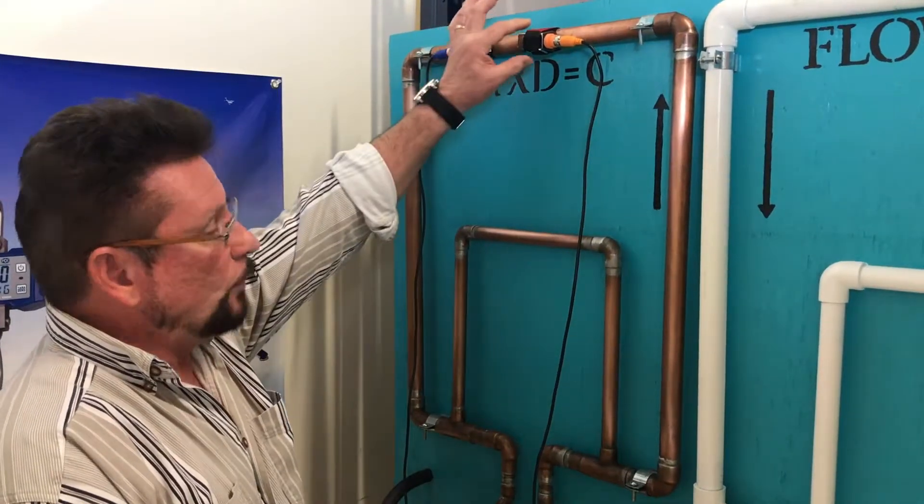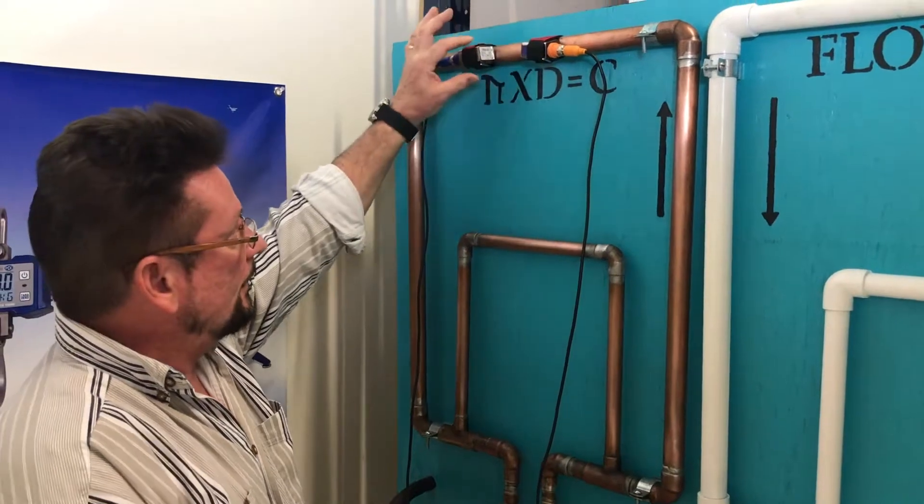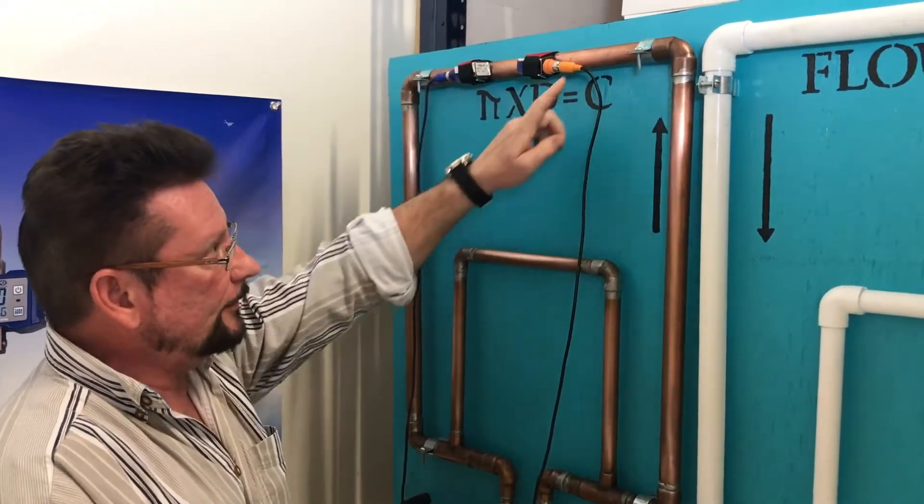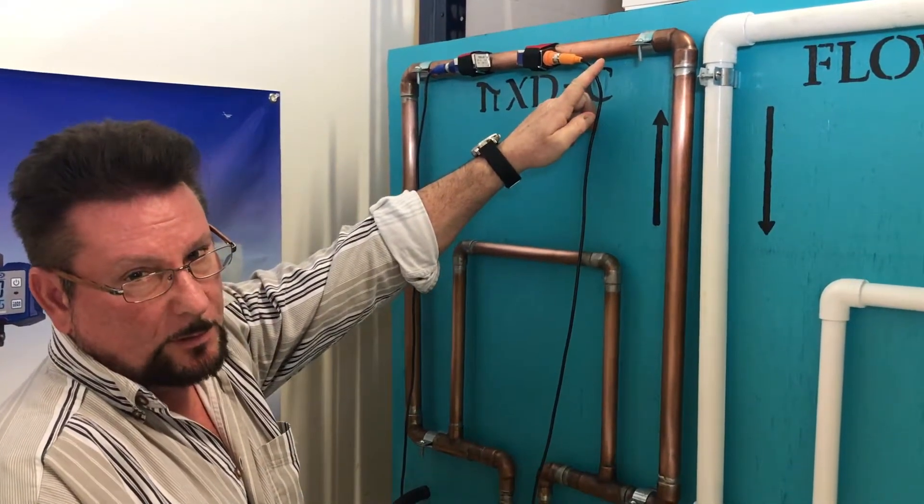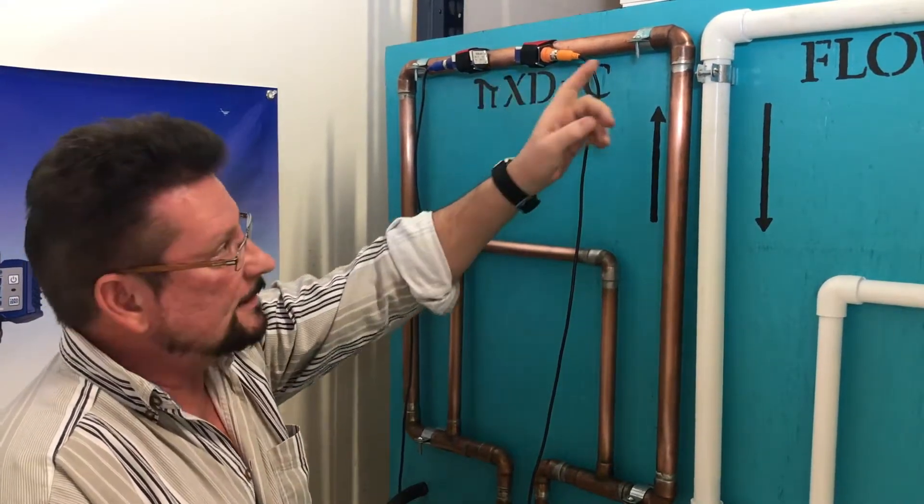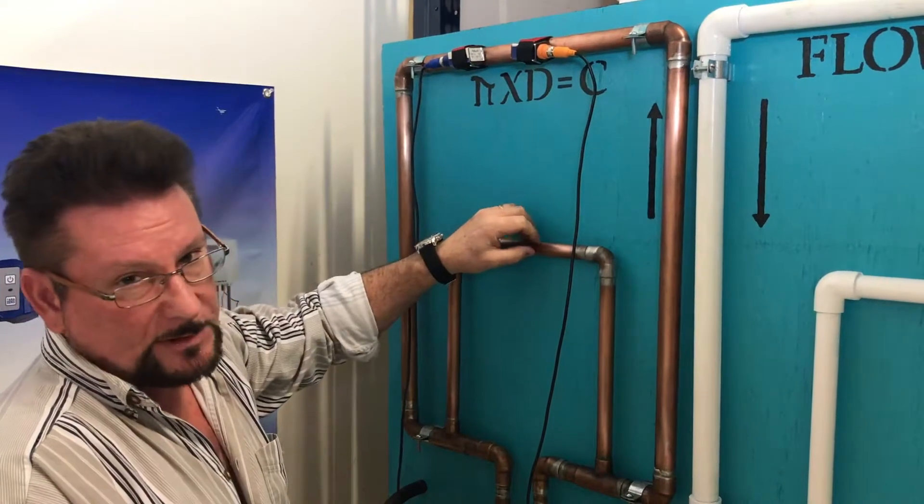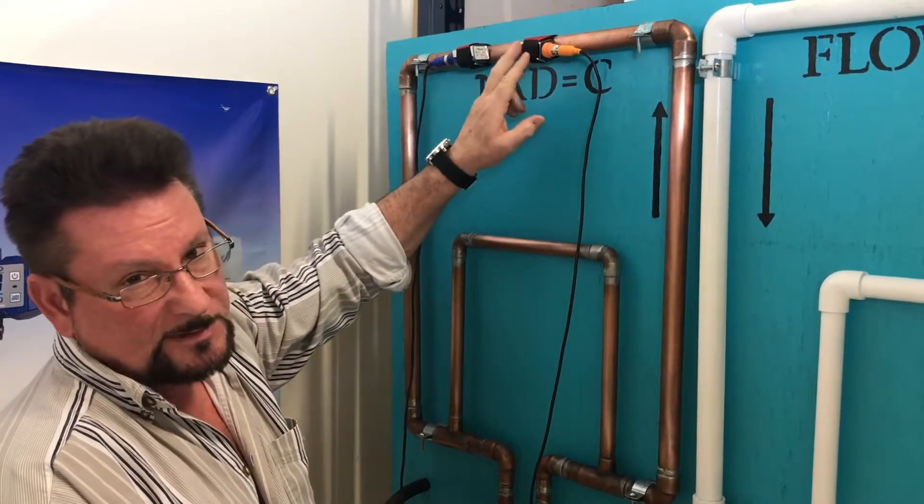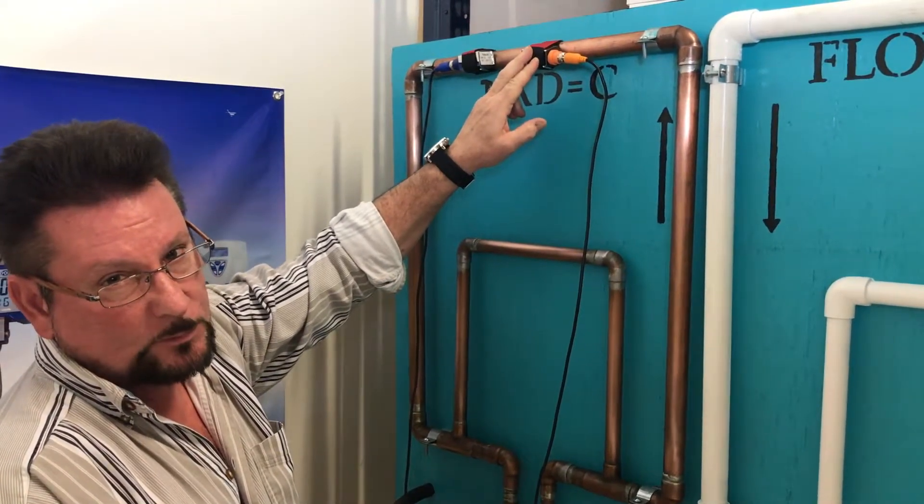Now we're using S-1 sensors, because our pipe size is between three-quarter inch, this is three-quarter inch, and four inches. We want to use the smaller sensors, which are S-1.